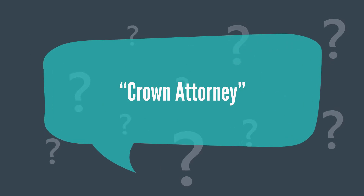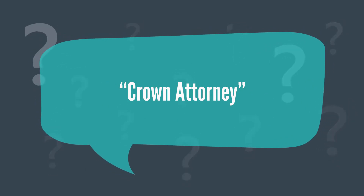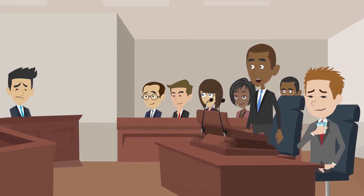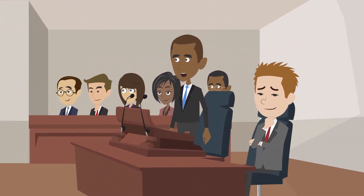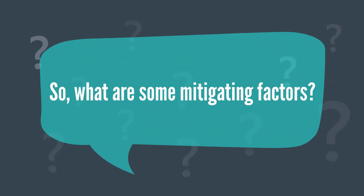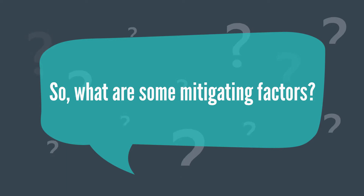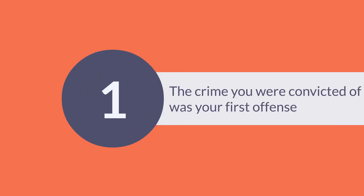By the way, if you haven't heard of the term Crown Attorney, that is what prosecutors are called in Canada. When your lawyer is trying to reduce the severity of the punishment you receive, your defense lawyer will focus on something called mitigating factors. Some examples include: first, the crime you were convicted of was your first offense, meaning you had no other criminal record.